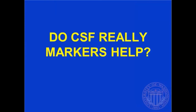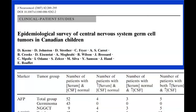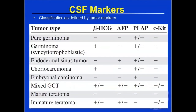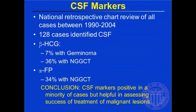So do CSF markers help? When I was a resident, we used to get CSF markers and blood markers and wait until they were back before we'd operate. But there's a wonderful study by the Canadians — they pooled all their children with central nervous system germ cell tumors and looked at beta-HCG and alpha-fetoprotein. Only 7% of people with germ cell tumors were positive for beta-HCG, and 36% with non-germ cell germinomatous tumors. Same with alpha-fetoprotein: none were positive with beta-HCG, and only 34% for non-germ cell tumors.